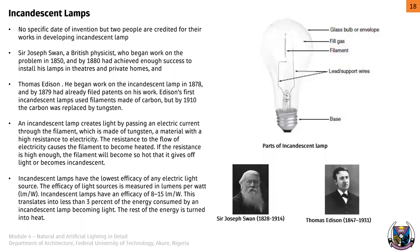The first type of artificial lighting is the incandescent lamp — the first type of lamp developed. The two people credited with developing it are Sir Joseph Swan and Thomas Edison, who filed the patent. The first incandescent lamp used a carbon filament, but in 1910 carbon was replaced by tungsten, which is still used today. An incandescent lamp creates light by passing electric current through a tungsten filament, which has high resistance to electricity.